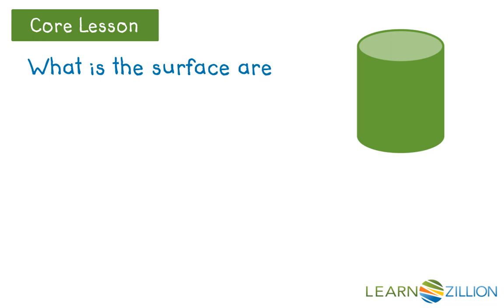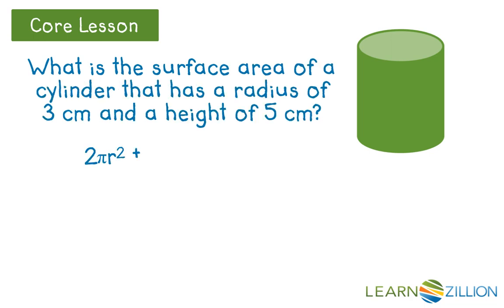Let's look at one more example. What's the surface area of a cylinder that has a radius of 3 centimeters and a height of 5 centimeters if the surface area can be found by using the expression 2 pi r squared plus 2 pi r h. In this expression, r is the radius of the circular bases, and h is the height of the cylinder.